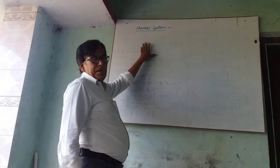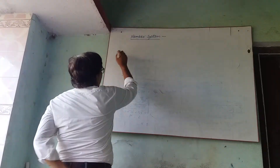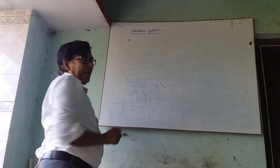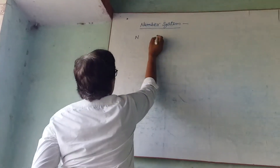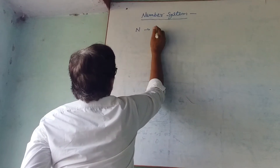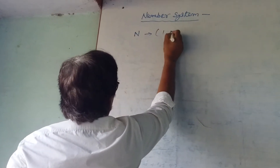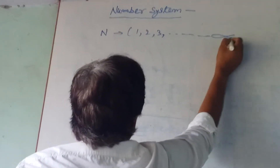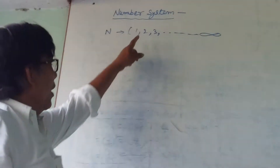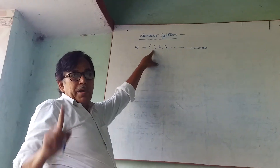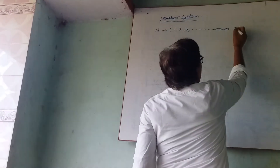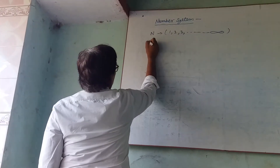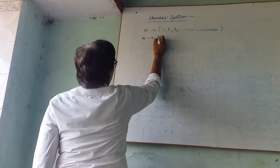Number system. This includes Natural Numbers, denoted by N. The set of natural numbers is {1, 2, 3, ... } to infinity. The smallest natural number is 1 and the largest is infinite.